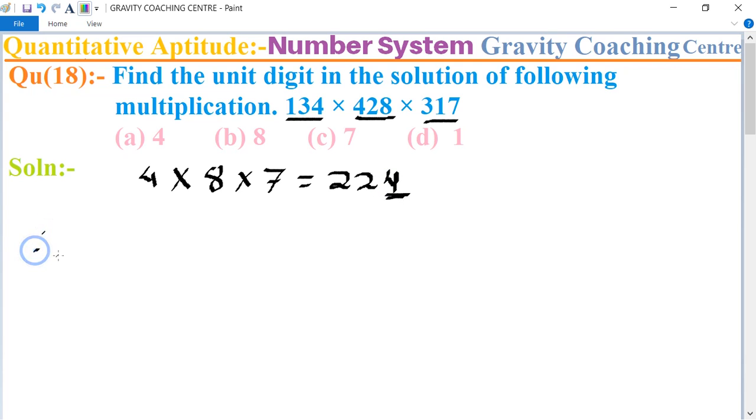Therefore, 4 is the units digit of the multiplication of the given multiplication.